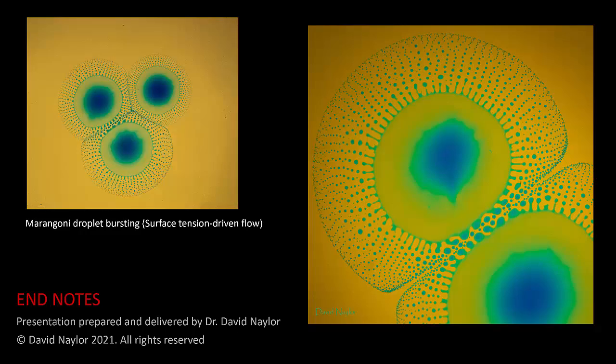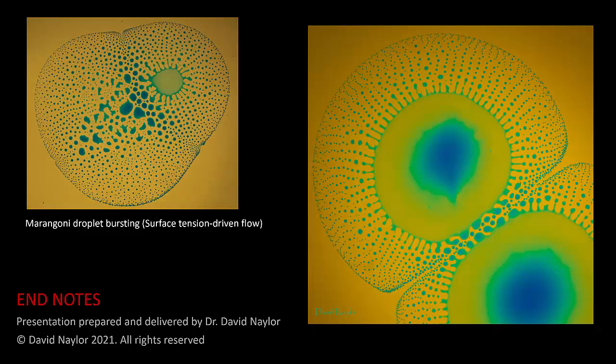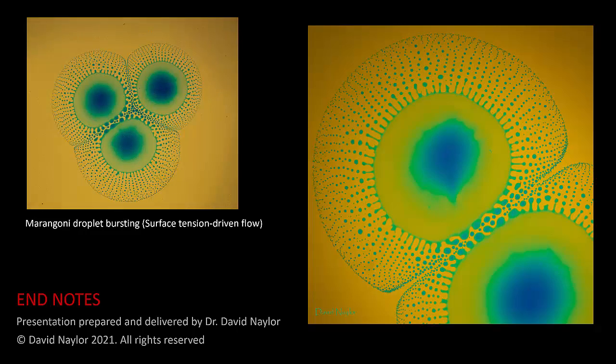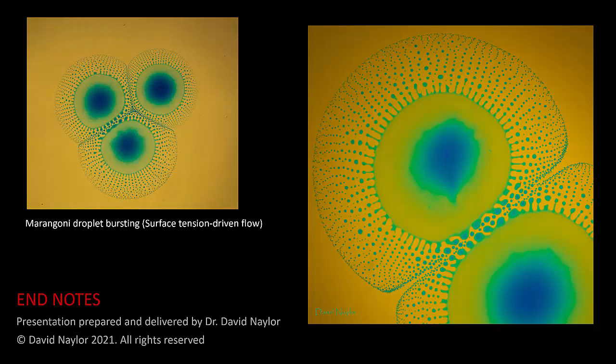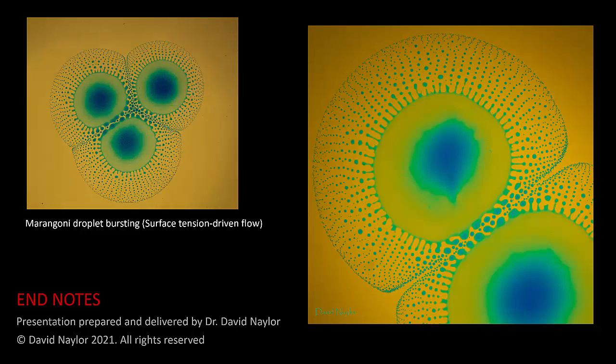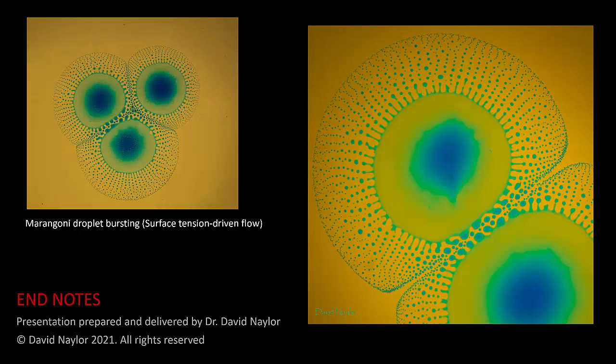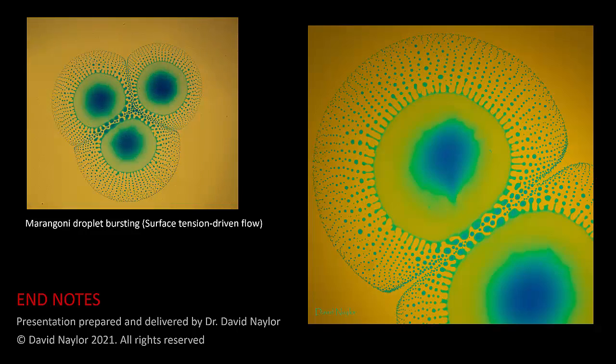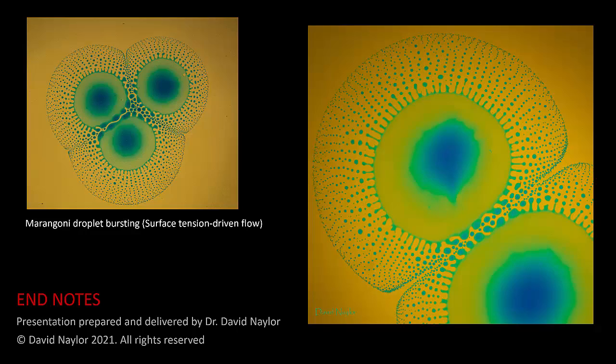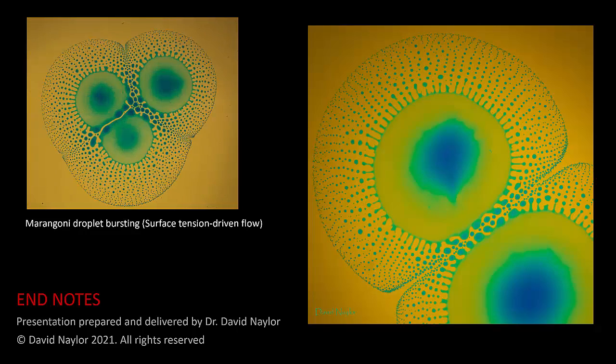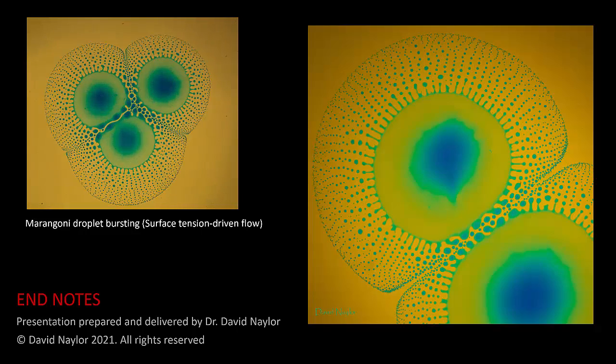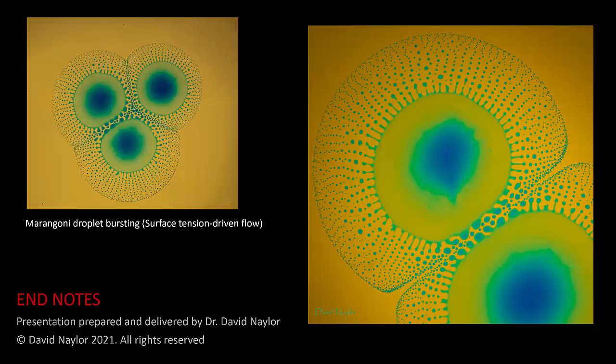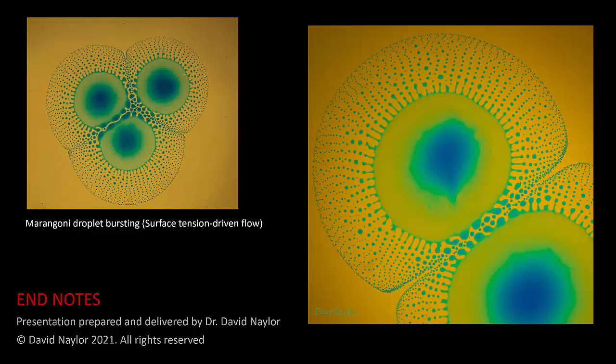I thought I'd end by showing you something interesting related to surface tension. This is called Marangoni droplet bursting. This happens when you put a droplet that's a mixture of alcohol and water on a layer of oil. The alcohol evaporates more rapidly near the edges of the droplet. So you have a higher concentration of alcohol at the center than at the edges. And alcohol has a lower surface tension than water. So that sets up a surface tension gradient. And this surface tension difference drives a flow from the center to the outside of the droplet. And you get this beautiful bursting effect. As far as I know, Marangoni droplet bursting has no practical applications. I just think it looks cool.